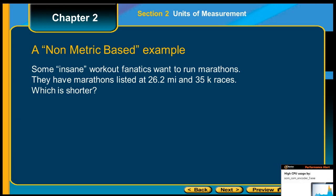Now you can have some strange units that are not metrics. Here's an example. Some insane workout fanatics want to run marathons. They have marathons listed at 26.2 miles and 35k races. Let's pick the shorter one because I am not running the longer one. Probably not going to run either one, but let's just pick.